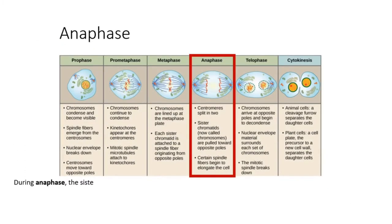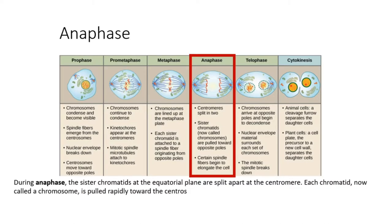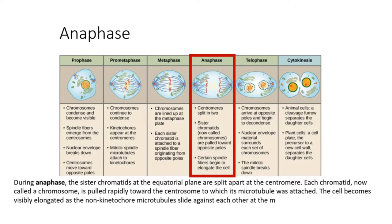During anaphase, the sister chromatids at the equatorial plane are split apart at the centromere. Each chromatid, now called a chromosome, is pulled rapidly toward the centrosome to which its microtubule is attached. The cell becomes visibly elongated as the non-kinetochore microtubules slide against each other at the metaphase plate where they overlap.